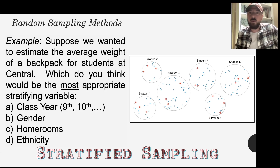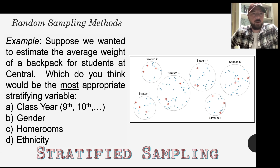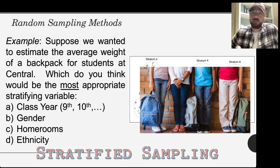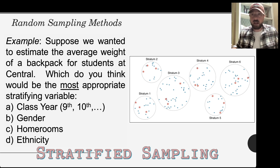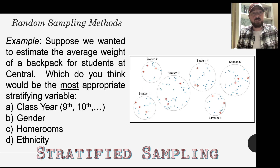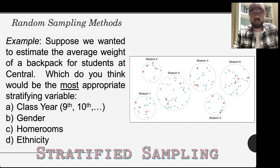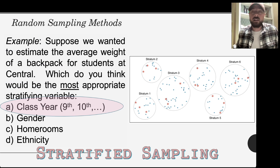Here's an example to think about: which would be the most appropriate stratifying variable to estimate the average weight of a backpack for students at Central High School? The four options are class year, gender, homerooms, or ethnicity. From my experience, I think the most interesting would be class year — 9th, 10th, 11th, and 12th graders are probably more similar to each other than different when it comes to the weight of their backpacks.